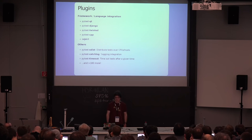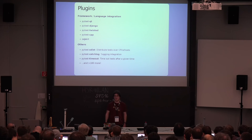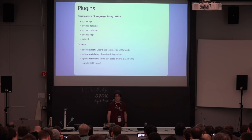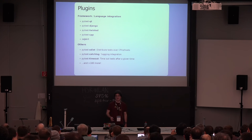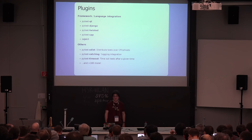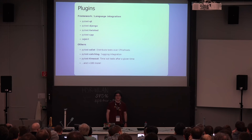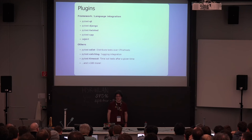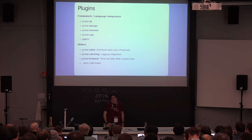I wrote 180 plugins here because that's what I found — someone told me it's over 200, but it's definitely a lot. There's pytest-xdist to distribute tests over several hosts or CPU cores, which is quite nice if your test suite is taking too long. There's catchlog, which integrates with the logging module, and timeout, which starts a second thread for each test and aborts it with a timeout error if something hangs — nice if you have a CI like Travis CI where otherwise you'd wait 40 minutes.